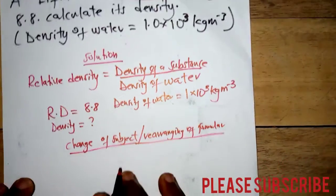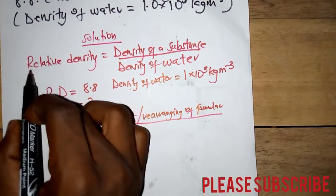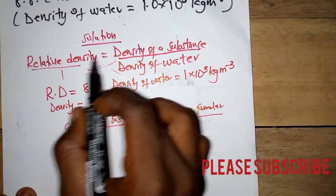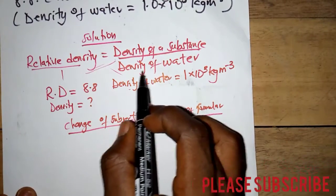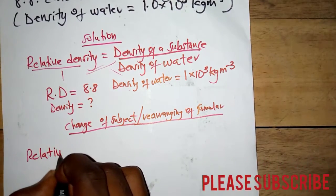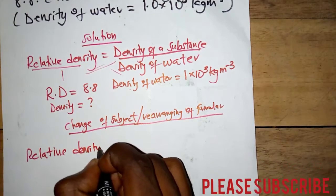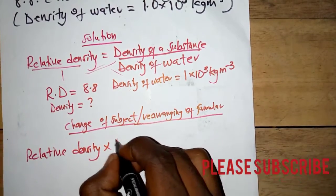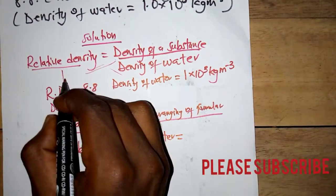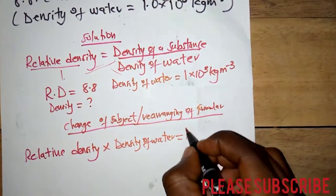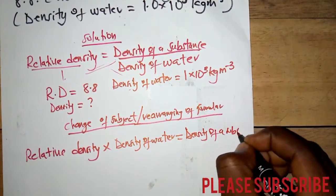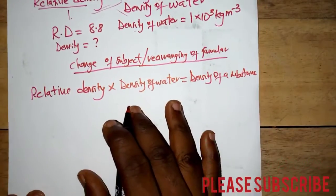Rearranging the formula: we have relative density over one here. We cross-multiply — relative density multiplied by the density of water on one side, and one multiplied by the density of the substance on the other side.